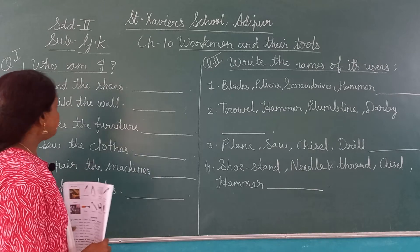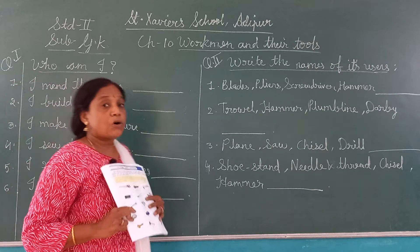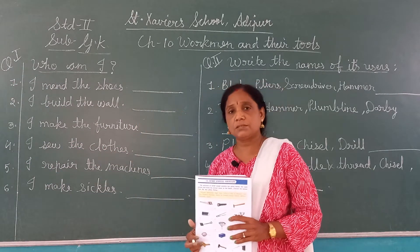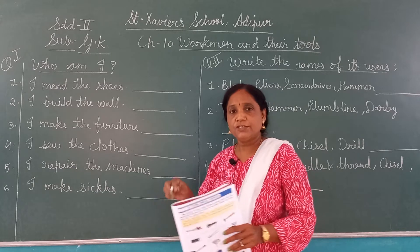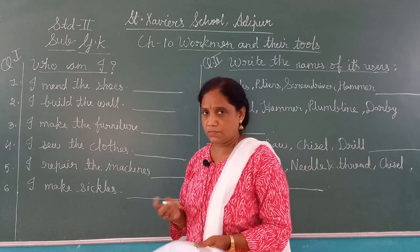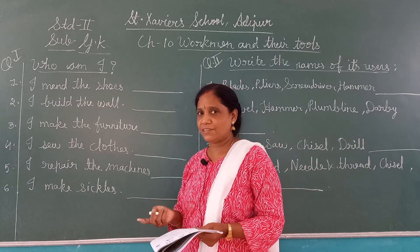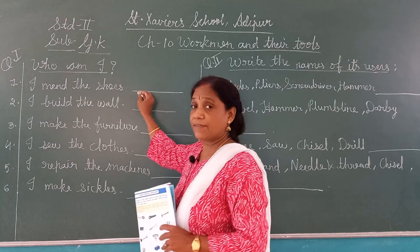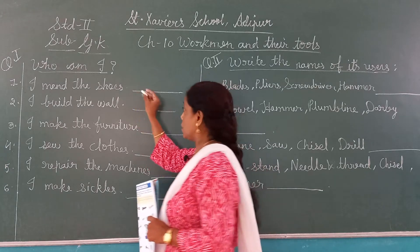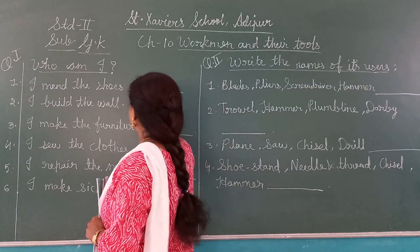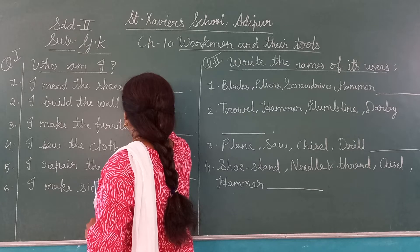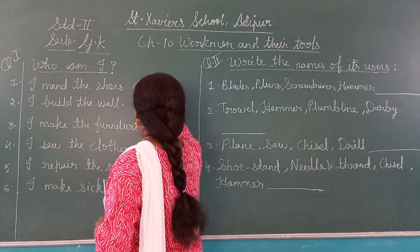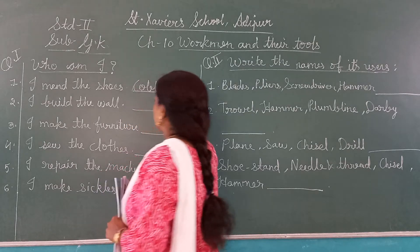Who am I? Means, mein kaun hoon? I mend the shoes — mein jute-chappal silta hoon. Who is this? Yes, cobbler. So here we have to write the first answer: cobbler, C-O-B-B-L-E-R.